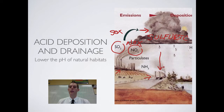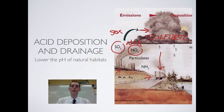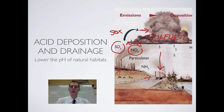Once acid rain gets into the environment, it can do significant amounts of damage. It can lower the pH of water, which is obviously going to be very hard on organisms living in that water. Once water becomes acidic, it can cause rocks in that waterway to release other harmful metals such as lead and aluminum. And obviously, acid rain falling on vegetation is going to kill vegetation over time.